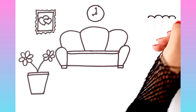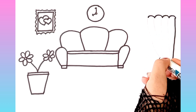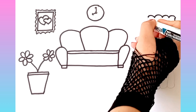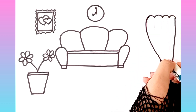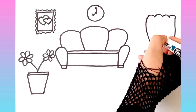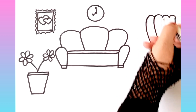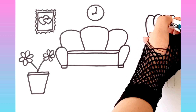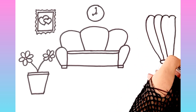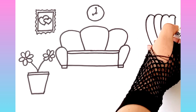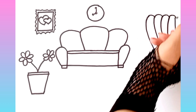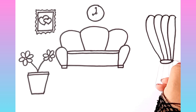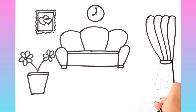Q is for queen, qu, qu, queen. R is for rabbit, r, r, rabbit. S is for sun, s, s, sun.